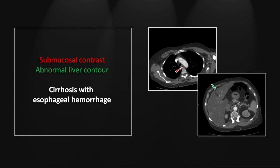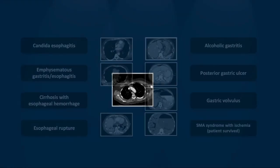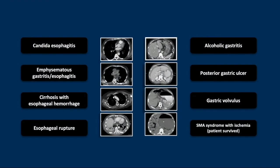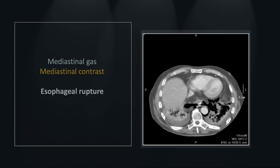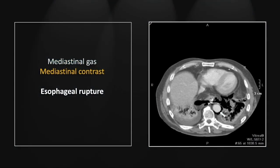So that's a case of cirrhosis with active esophageal hemorrhage. Our next case is an esophageal rupture. There is extensive mediastinal gas, and here on the posterior aspect of the esophagus you can see free contrast that has leaked from the distal esophagus. This is the classic appearance of a Mallory-Weiss tear leading to Borhoff syndrome.